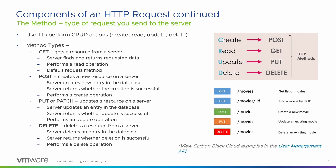The next component of an HTTP request is the method, which is the type of request you send to the server. It is used to perform create, read, update, and delete actions. GET is the default method type, and it retrieves a resource from a server — it reads data from the database. POST creates a new resource on a server and returns an API response of whether the creation was successful. PUT or PATCH update a resource on a server and return an API response of whether the update was successful. DELETE deletes a resource from a server and returns an API response of whether the deletion was successful. We can see some examples with this Movie API — we can retrieve a list of movies with the GET method type, and if we create, update, or delete a movie, we will get a response back letting us know if the action was successful. You can view more complex Carbon Black Cloud examples in the User Management API.